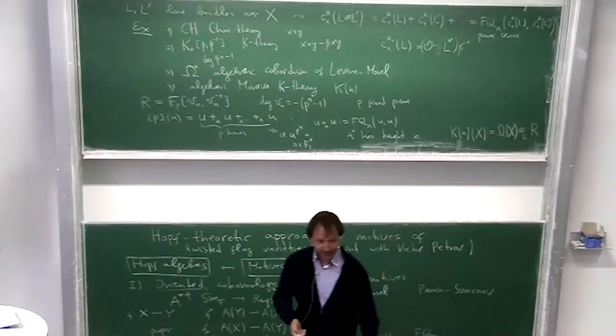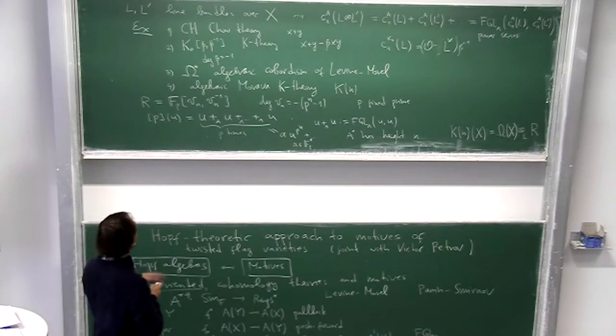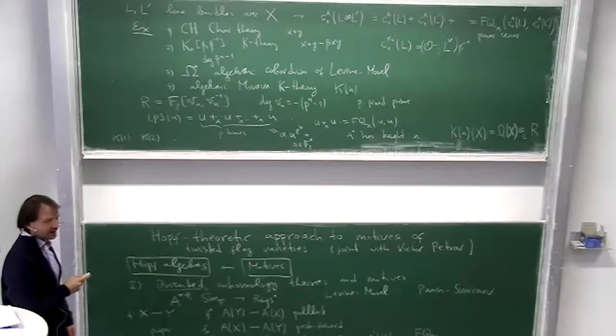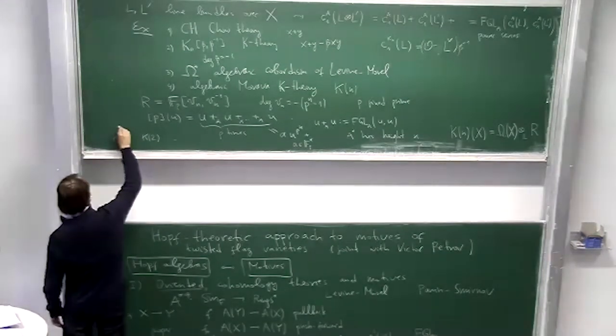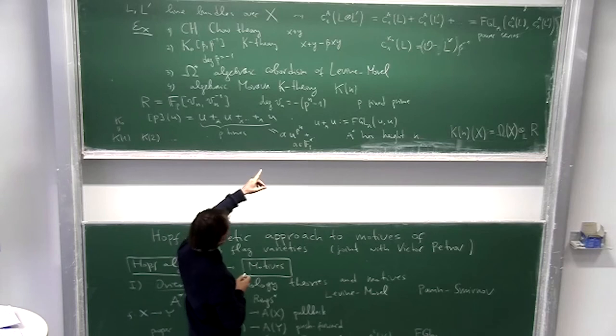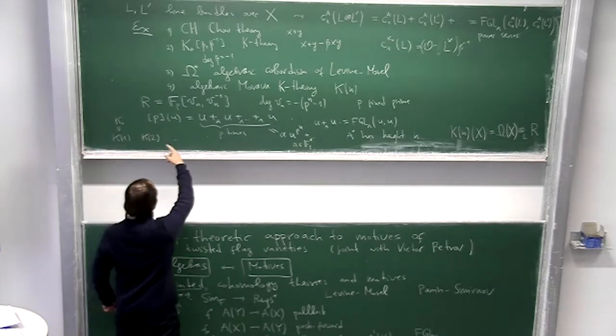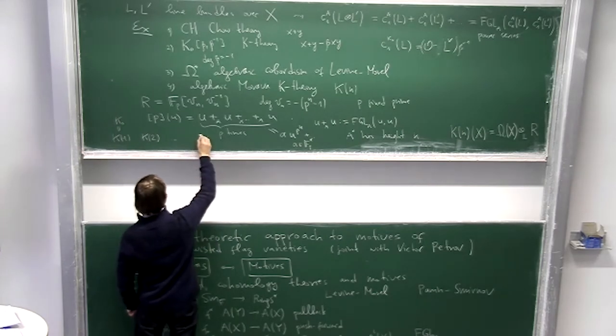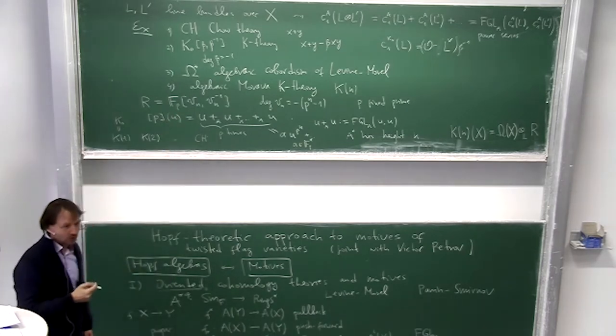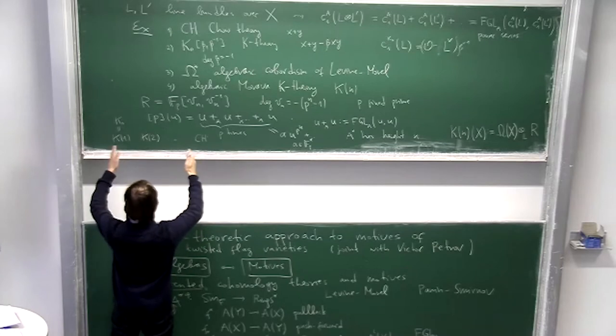Algebraic cobordism tensor with this formal group law of height n. So L is the Lazard ring, so this is a module over L, and R is also an L-module because by the definition of the Lazard ring there is a unique homomorphism from L to R given by this formal group law of height n. So yeah, you see it's not really concrete but one can live with it. It's not so bad this definition. It looks like we need to know Omega to compute k_n, but there are ways to compute k_n without knowing Omega, so it's not so bad as it looks like.